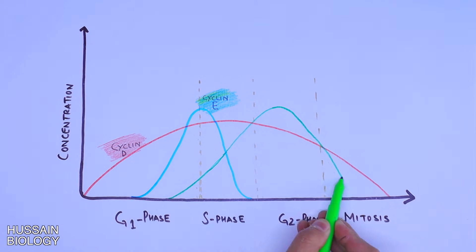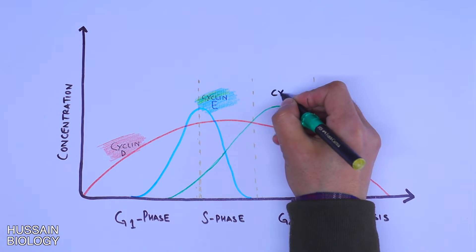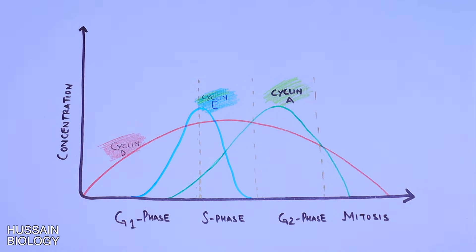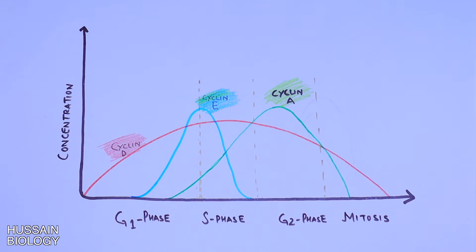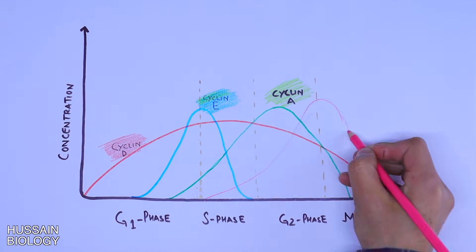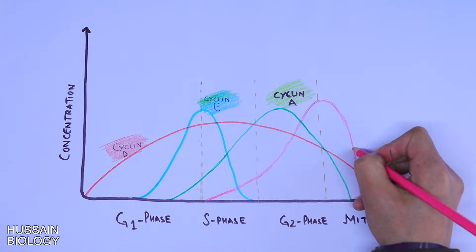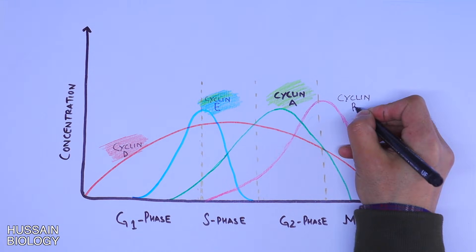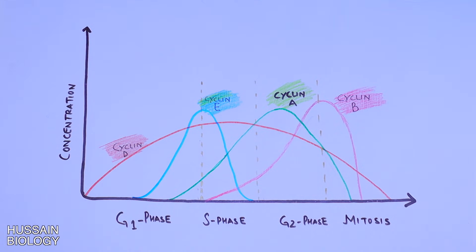Cyclin A kicks in from G1 phase but only peaks in G2 phase, then declines in M phase. Cyclin B shows its presence from S phase but peaks at the G2 to M phase transition, and then also declines in M phase.